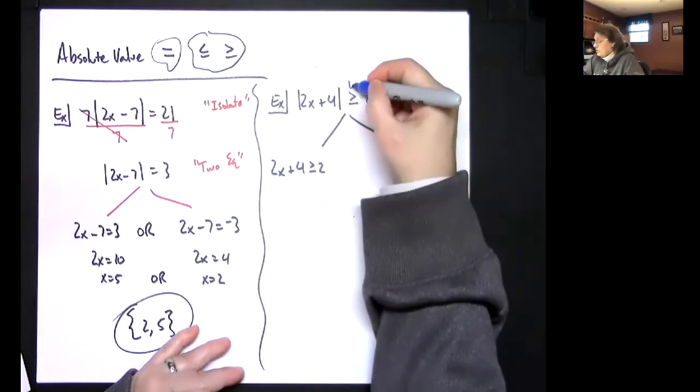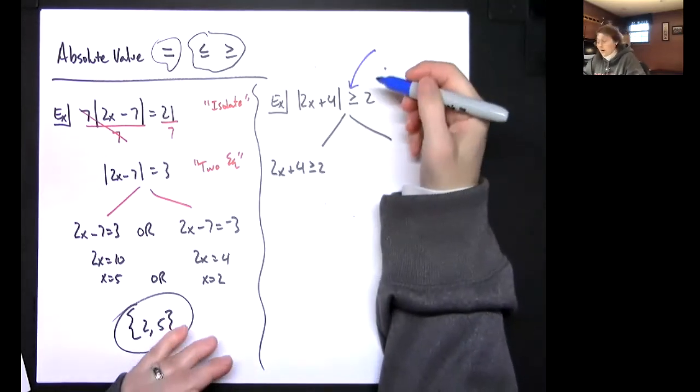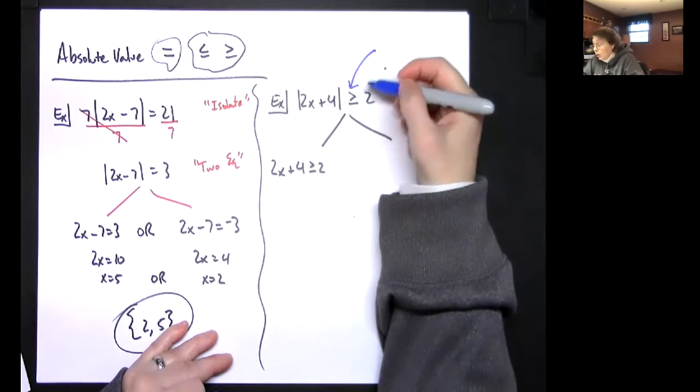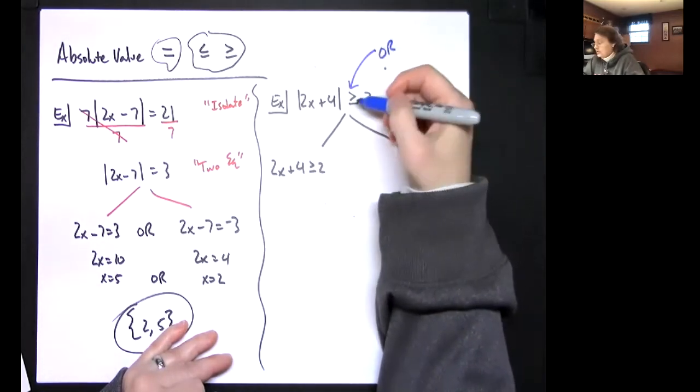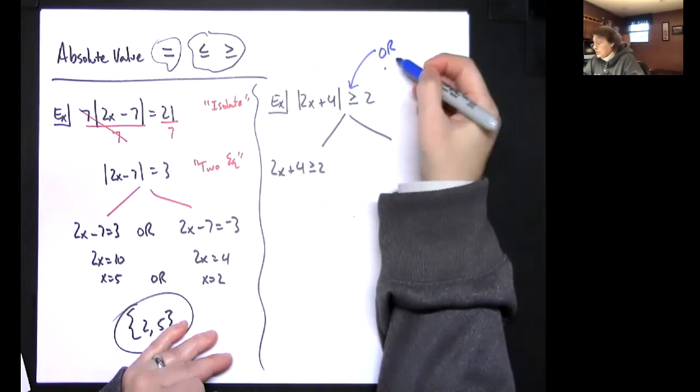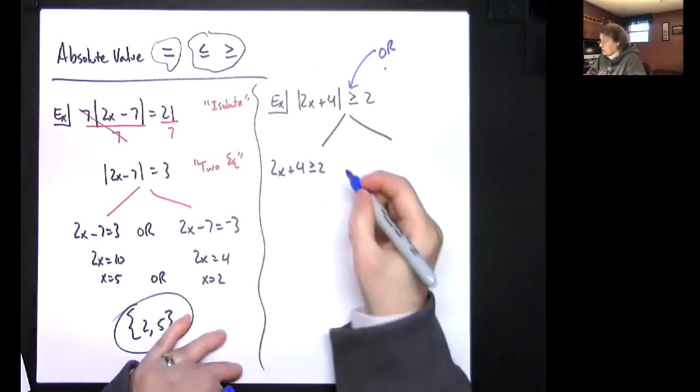Now if we remember, we looked at this right here and we had a little thing where if it was greater or less, it was an or. If it was less than we emphasized the and, it was an and. So with this being greater, it's going to be an or. So then I know it's going to be an or right there.